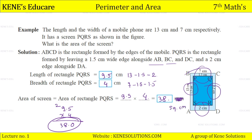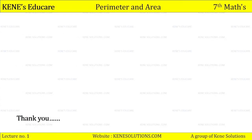Students, please note a correction: the unit here is square centimeter, not square meter, because the given dimensions are in centimeters. In activity-based questions, such printing mistakes can occur — always check units carefully. So the area of the screen is 38 square centimeters. Today in this lecture, we learned the concept of perimeter, solved some numerical examples, then learned the concept of area with its formulas, and solved examples. We stop here for today — see you in the next video. Thank you!